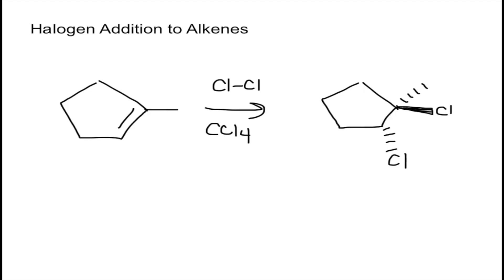In this video I'm going to explain what a halogen addition to an alkene is. Below I've listed the overall reaction. When talking about halogens, you can either add bromine or chlorine — those are the two halogens that can be used. Here I've drawn the reaction using chlorine. The CCl4 below is just a solvent; it doesn't participate in the reaction. The product can be drawn with the chlorines either cis or trans.